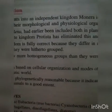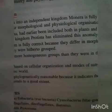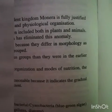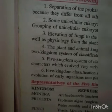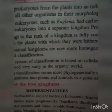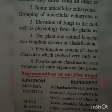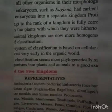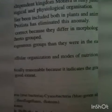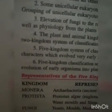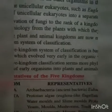Fourth, the plant and animal kingdoms are now more homogeneous groups than they were in the earlier two kingdom system of classification. Fifth, the five kingdom system is based on cellular organization and mode of nutrition — characters which evolved very early in the organic world. Sixth, five kingdom classification seems more phylogenetically reasonable because it indicates the gradual evolution of early organisms into plants and animals.